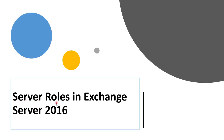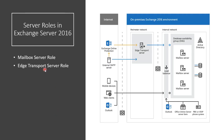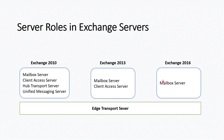In this video we are going to see detail about server roles in Exchange Server 2016. There are two server roles in Exchange Server 2016: the first one is the mailbox server role, and the second one is the edge transport server role. The edge transport server role is optional for your organization.